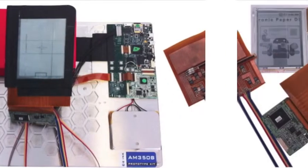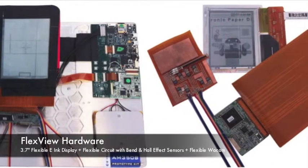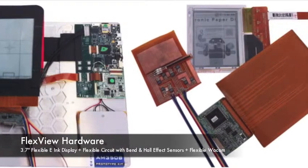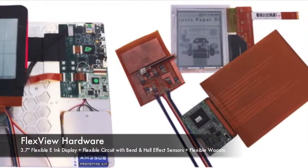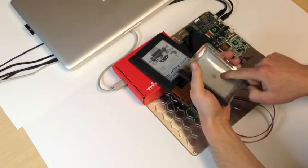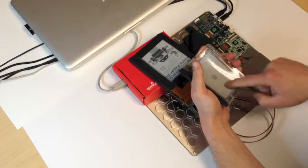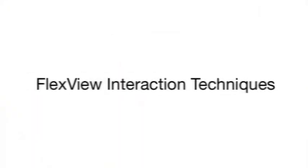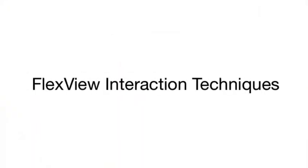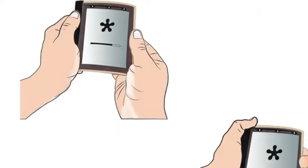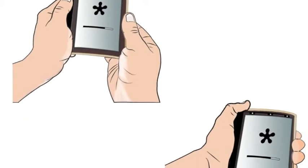FlexView is a prototype system and set of interaction techniques that augments touch input using display curvature as an additional input channel. To augment touch input, we explore two forms of display deformation.